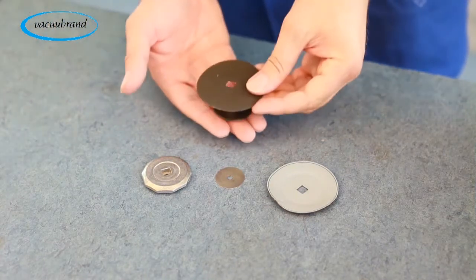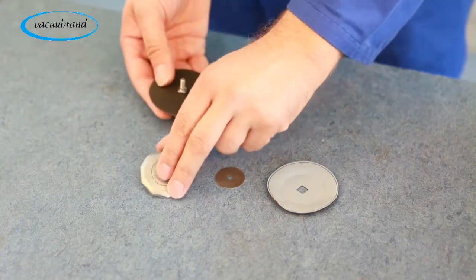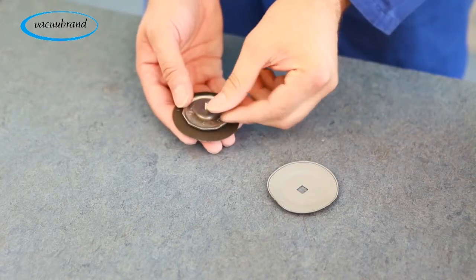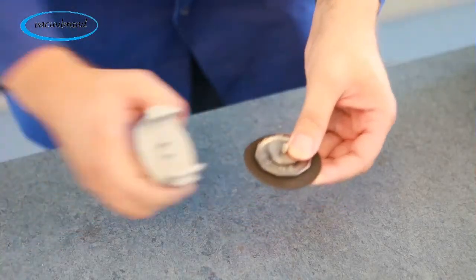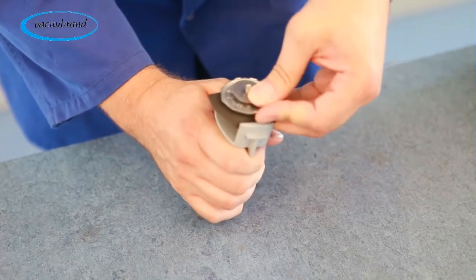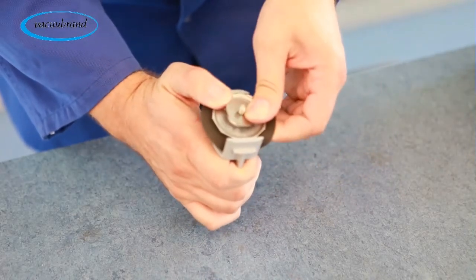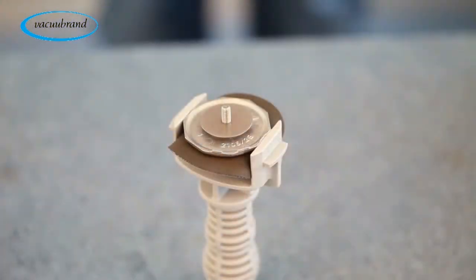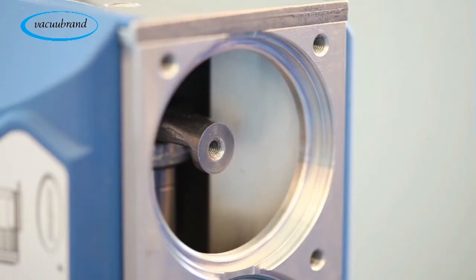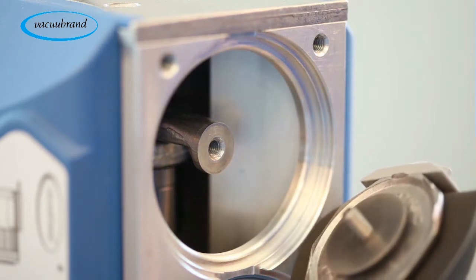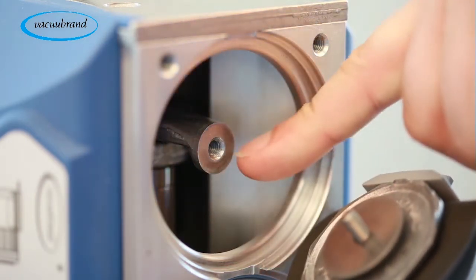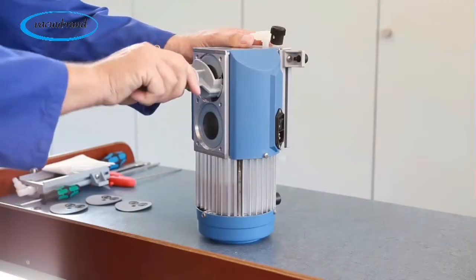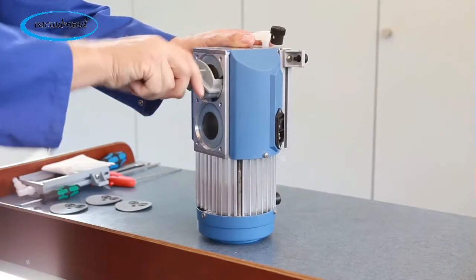Replace the worn diaphragm with a new diaphragm in the same orientation and reassemble to the diaphragm assembly. Place the assembly back into the diaphragm wrench. With the pump on end, guide the diaphragm assembly back into position on the connecting rod, replacing the support disc assembly washer in the process, and screw the entire assembly back into place.